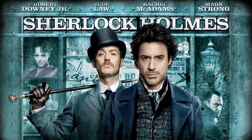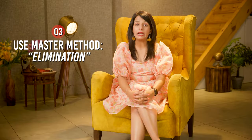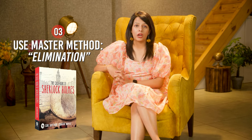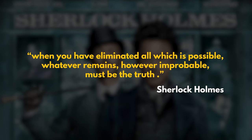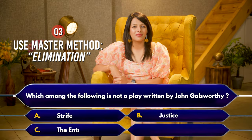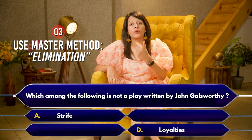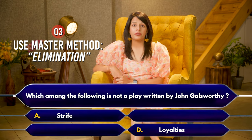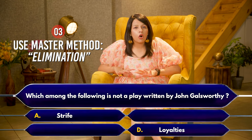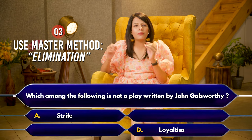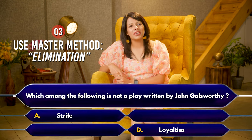Moving to point number three: the elimination technique. It is one of my favorite tips, derived from the fictional character of Sherlock Holmes created by Arthur Conan Doyle in the 19th century. Doyle's famous line from The Case Book of Sherlock Holmes says: 'When you have eliminated all which is possible, whatever remains, however improbable, must be the truth.' You can apply these words to the four options in the paper. After eliminating the wrong options, the one which remains shall be the correct one. Whenever you are confused between two options, use the elimination technique — it acts as smart guesswork and makes your answer more probable.